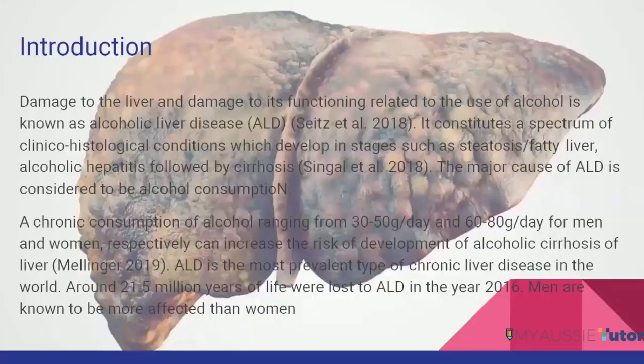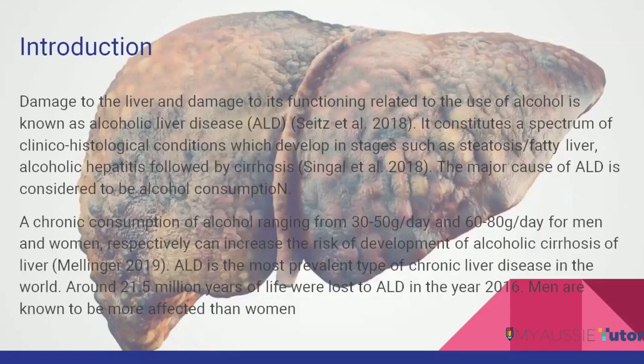First of all, what is alcoholic liver disease? Alcoholic liver disease, as the name suggests, is damage to the liver due to alcohol consumption — damage to the liver and its functioning related to chronic alcohol consumption. It is not a single entity; it is a progressive condition where there is a spectrum of clinico-histological conditions which develop in stages. It begins with steatosis or fatty liver, leads on to alcoholic hepatitis, and is then followed by cirrhosis, which is the last stage.